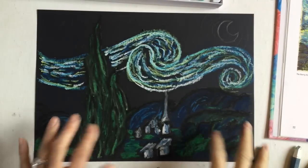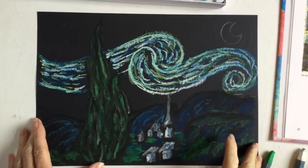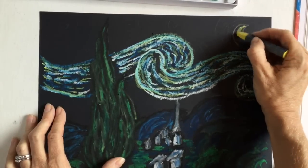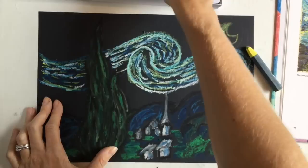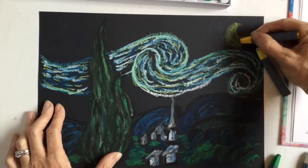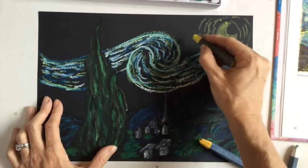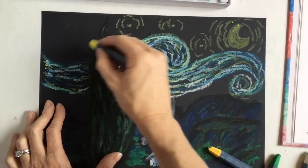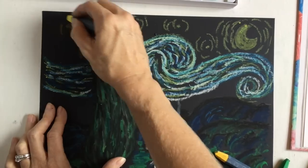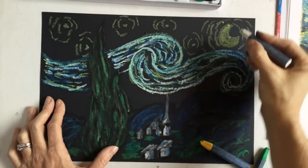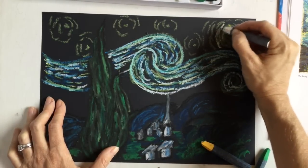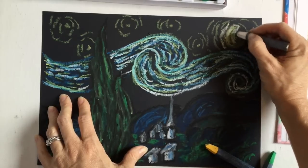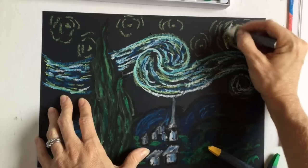All right, well, I feel like I'm happy with my swirly sky. Now I'm going to go in for the moon, and the moon is nice and light. Now I want to make it really stand out, so I'm going to use some more white here. And when you use white over yellow, for example, that will just make it even lighter.